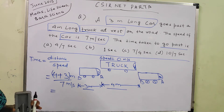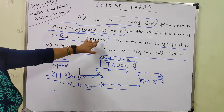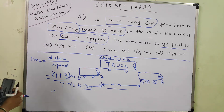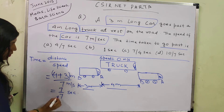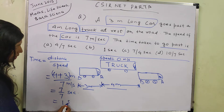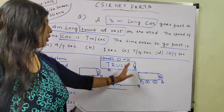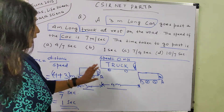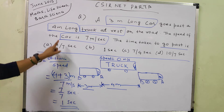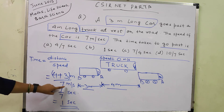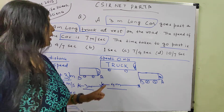For Distance, Speed and Time based questions we have to be very careful about units. Here: meter, meter per second — 10 meters all are same units. So, 4 plus 3 is 7, divided by 7, which equals 1 second. The time taken by the moving car to cross the truck is found by adding the length of truck and length of car to get total distance, then dividing by speed. Distance upon speed gives the time taken to go past — which is 1 second.